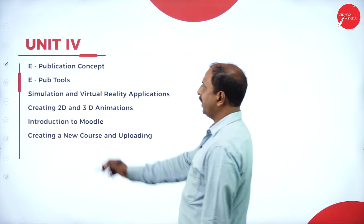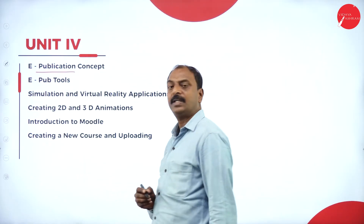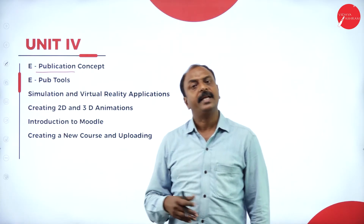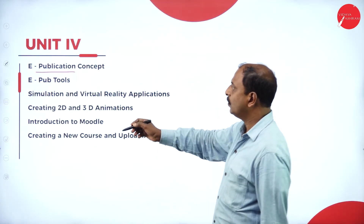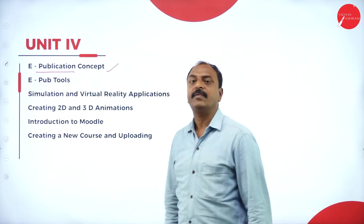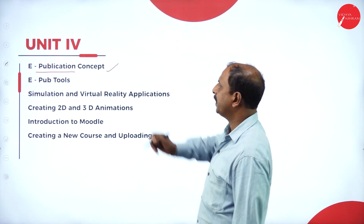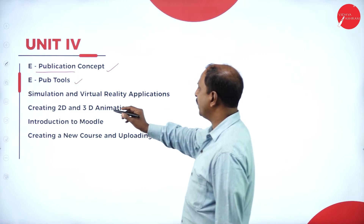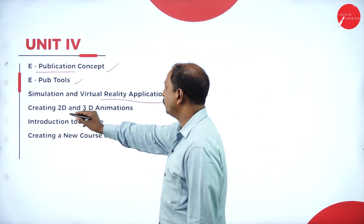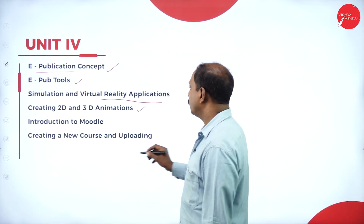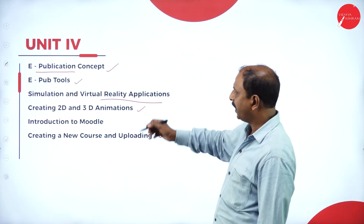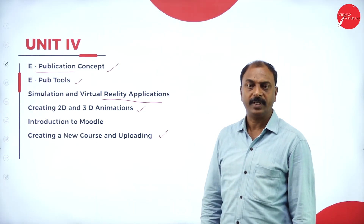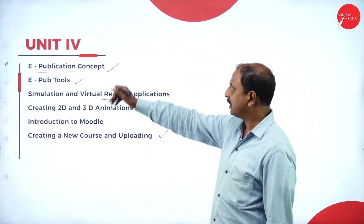In unit four, it is the e-publication concept. E stands for electronic — electronic publications means whatever content is available on the website is your electronic content. Once you publish your document, it is available to the world. We will also cover different tools for e-publications, concepts like simulation and virtual reality applications, creating 2D and 3D animations, and creating a website, wiki site, or blog and uploading content to it.